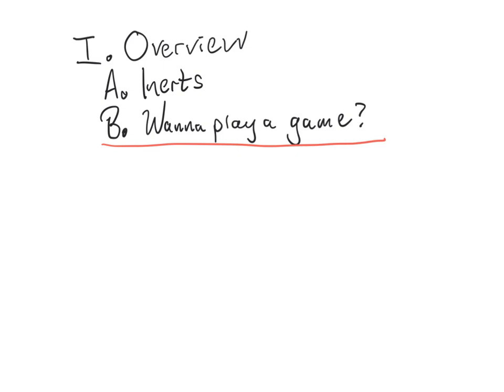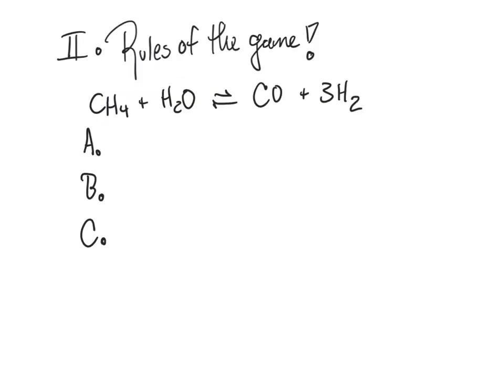We're going to play a game, so let's talk about this game. It is a chemical plant design game, and we are going to use steam reformation of methane to make carbon monoxide and hydrogen as the basis of our game. That's why we keep coming back to this example. This is a really handy way used in many chemical industries when we need hydrogen and a little bit of CO.